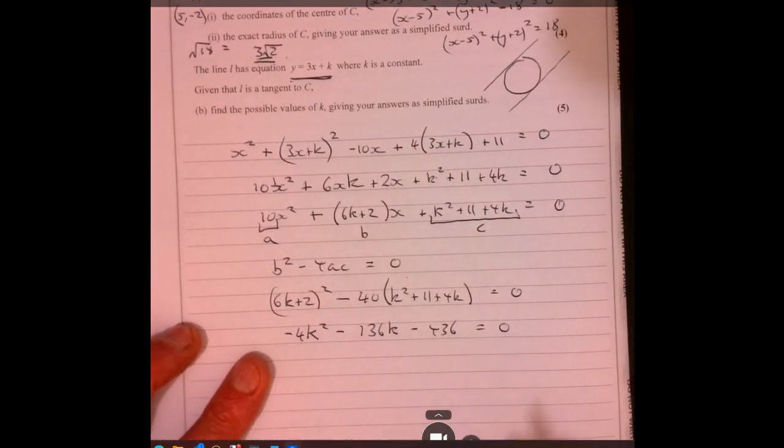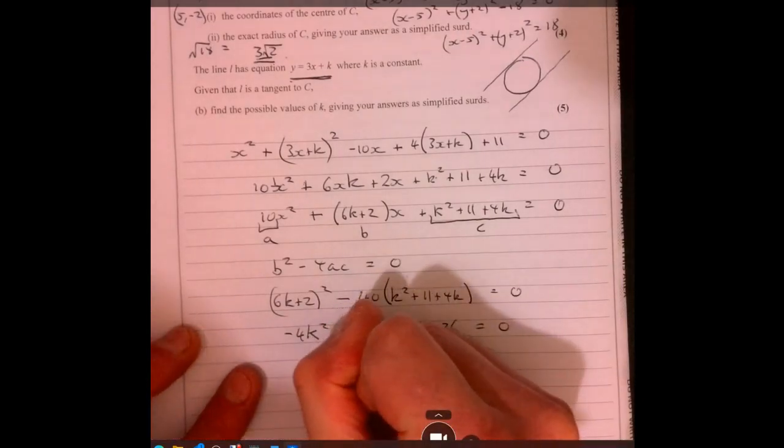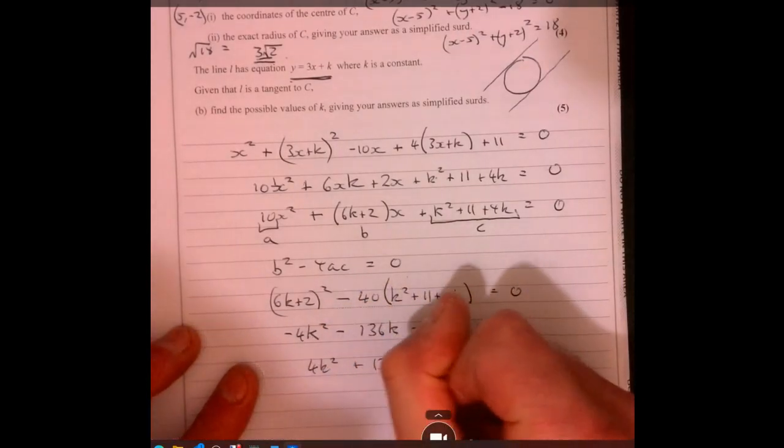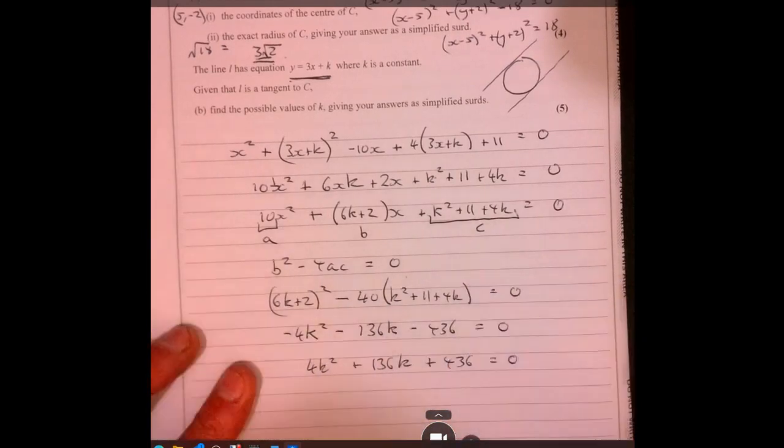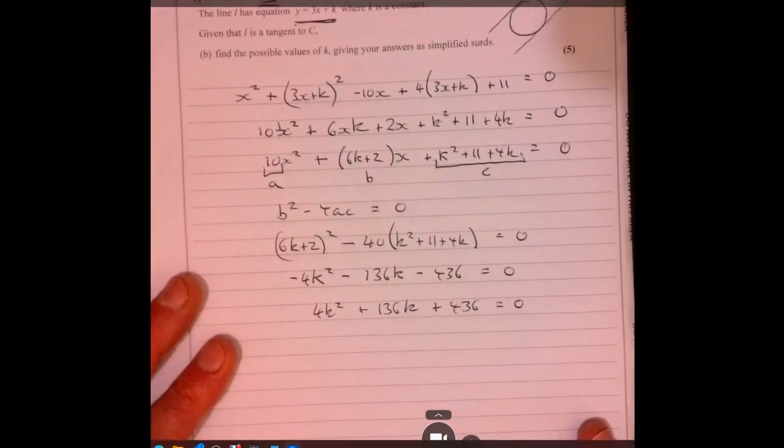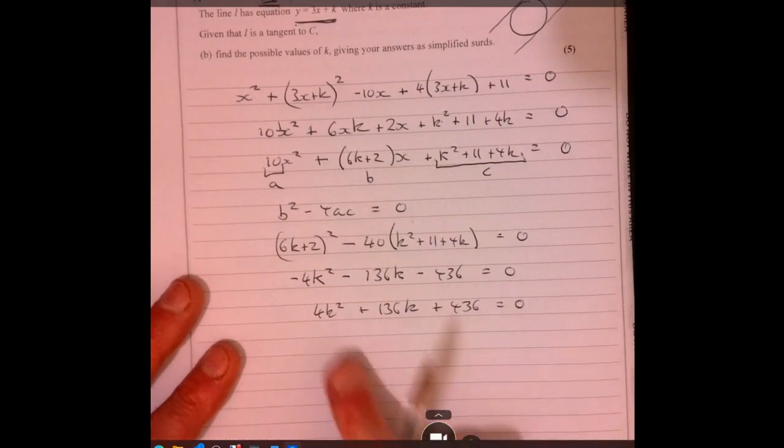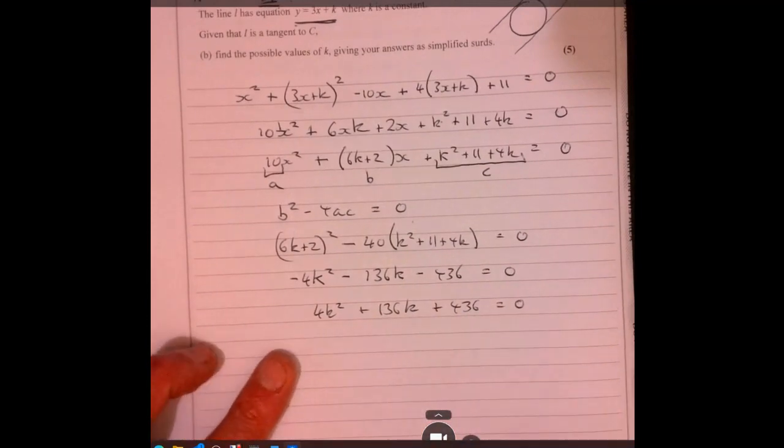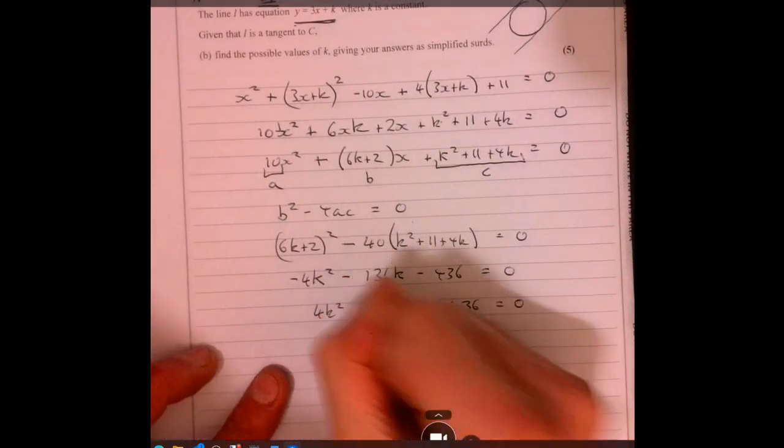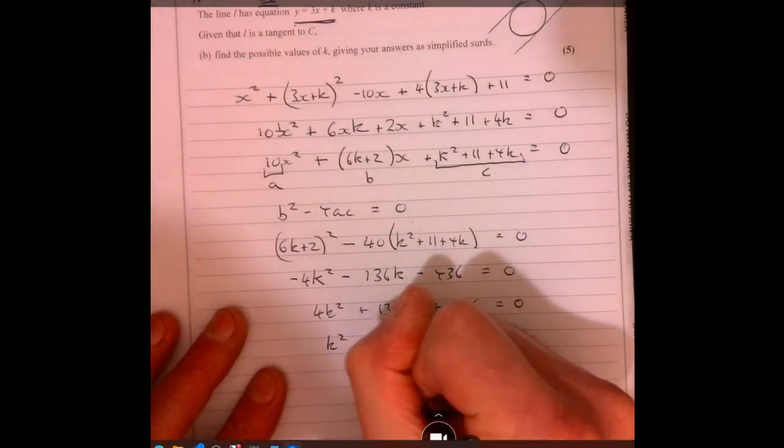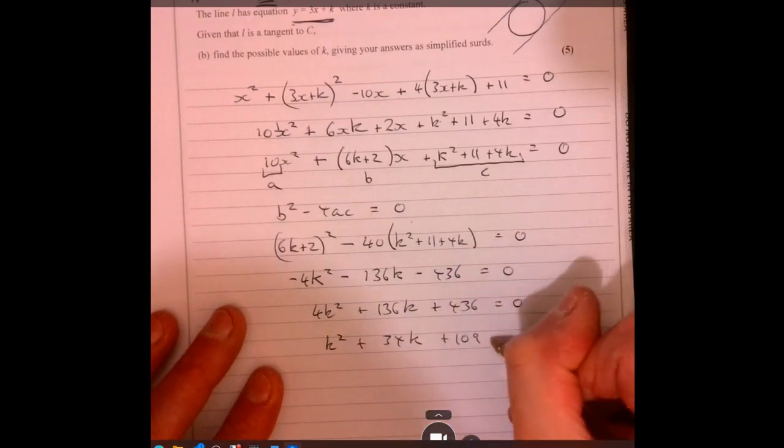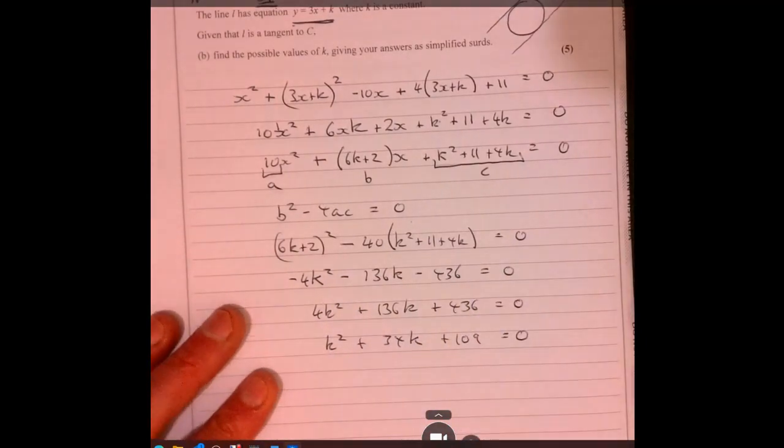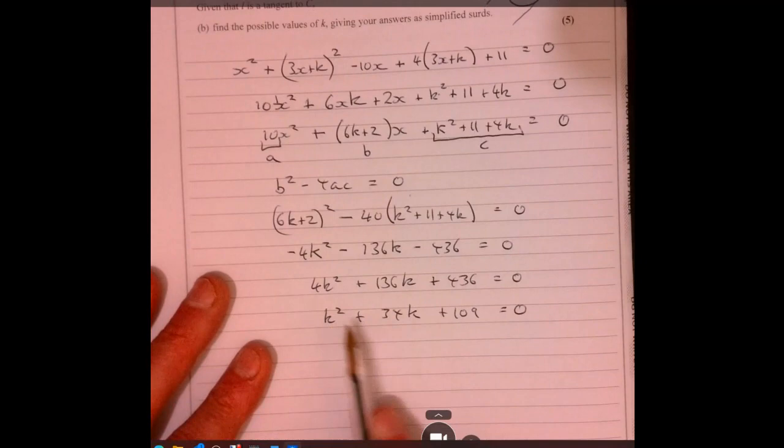To make my life a little bit easier, I'm going to multiply both sides by minus 1. So let's have it the other way around. Just gets rid of those negatives. Makes life a little bit easier for us. Now I just need to use... Oh, wait a minute, I can divide everything by 4. That's going to make life even easier. So if you don't spot that, it will still work. It just makes life easier, that's all. Now I'm going to use the quadratic formula.